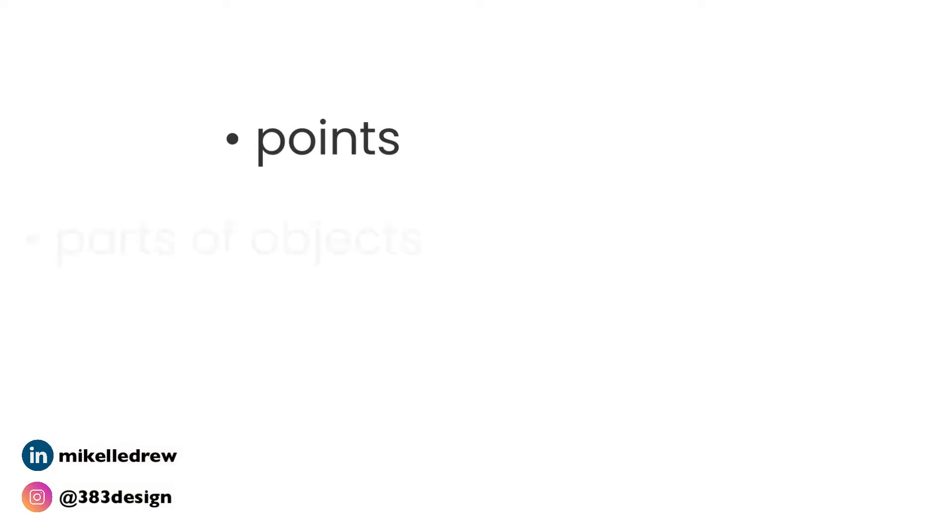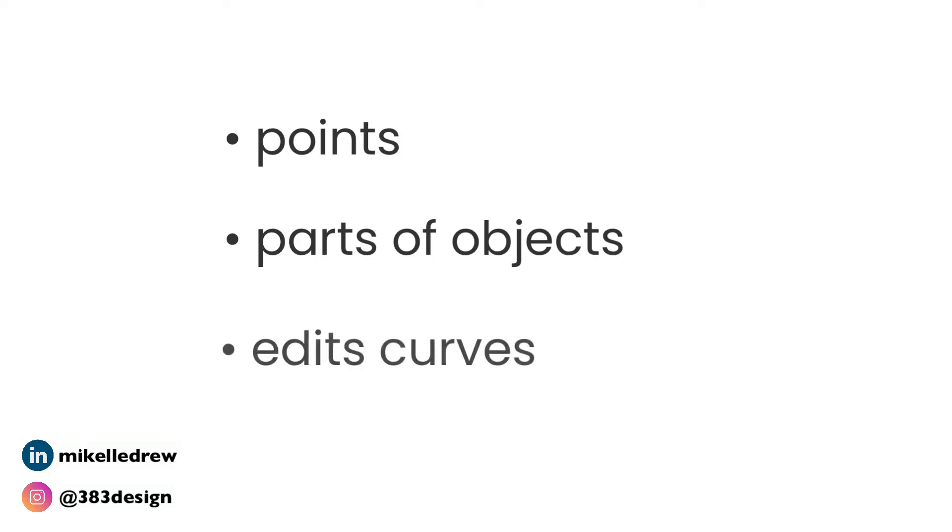This is the white arrowhead. This tool selects points, parts of objects, and edits curves. So if you want to select one point on your sketch, copy and paste one line that's already connected to other lines, or if you need to edit what you've drawn because it looks a little wonky, this is the tool to use. This is also the best tool to join your sketch, despite other things you might see that say you can join with the selection tool.